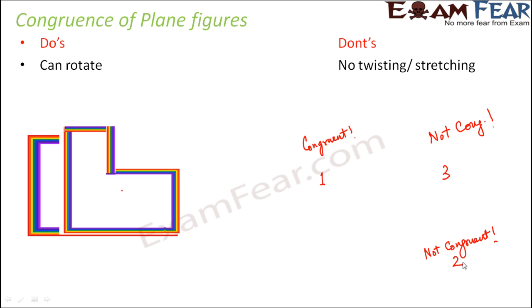So whenever you want to find congruence of two figures, you can rotate the figure as long as you are not altering its shape or size. But no twisting, no stretching, no bending is allowed.